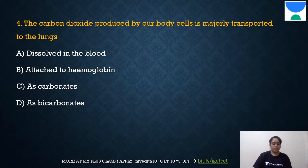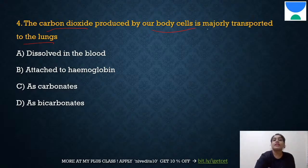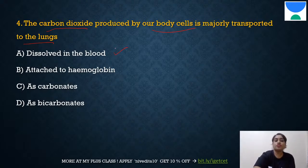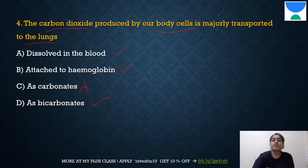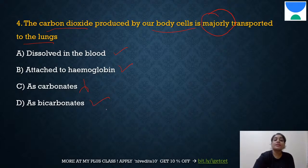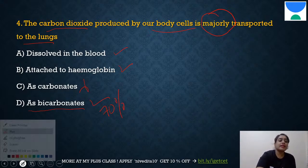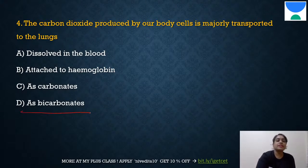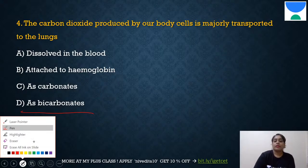Question 4: Carbon dioxide produced by body cells is transported to the lungs majorly as — the answer is D: as bicarbonates. While it is true CO₂ is also dissolved in blood and attached to hemoglobin, the question asks about the major form. 70% is transported as bicarbonate ions, making that the correct answer.